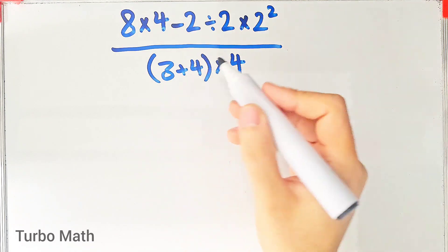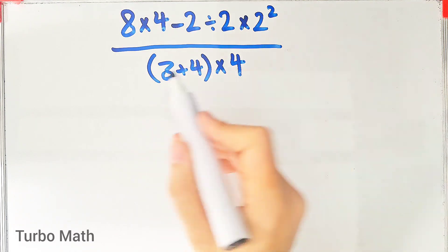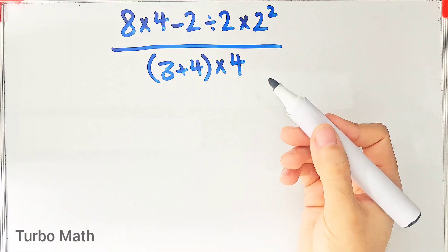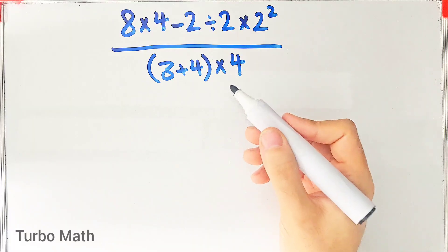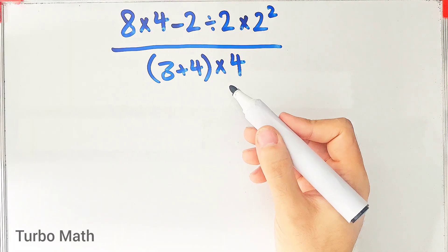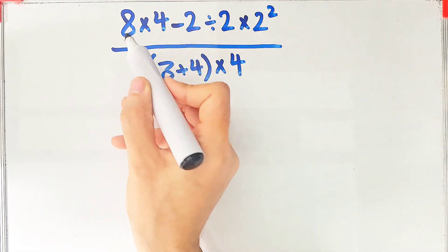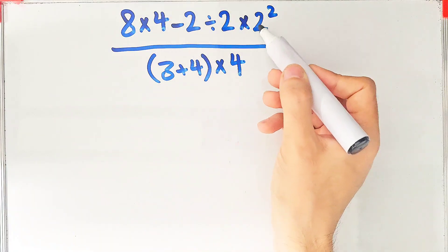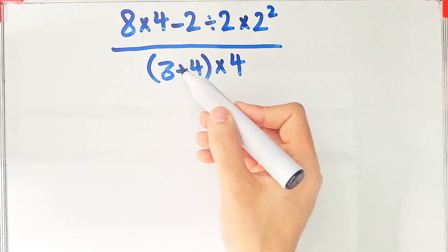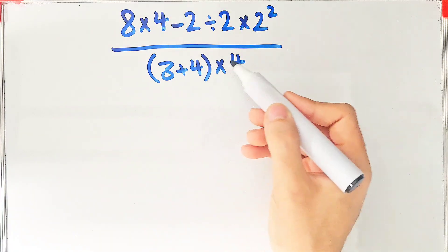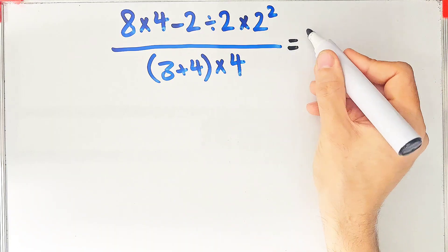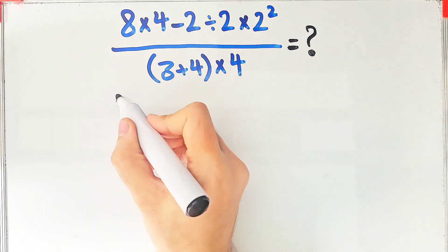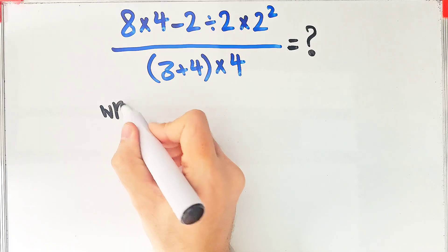Hi friends, welcome to Turbo Mass channel. A lot of people get confused when they see this question — they don't know which operation to do first, so they often make a mistake. The problem is: eight times four minus two divided by two times two to the power of two, all over three plus four times four. What is the answer?